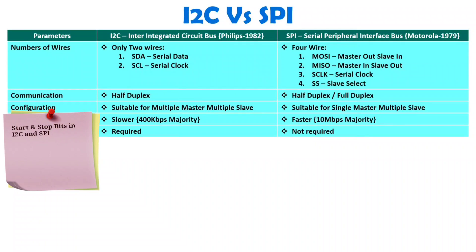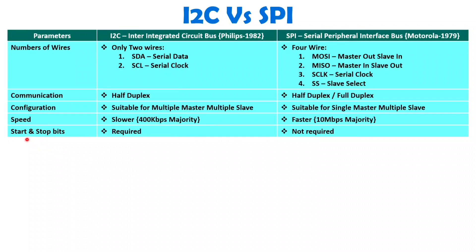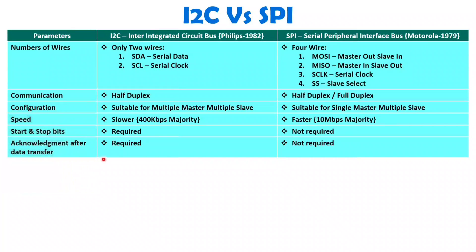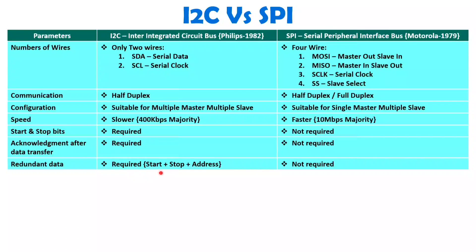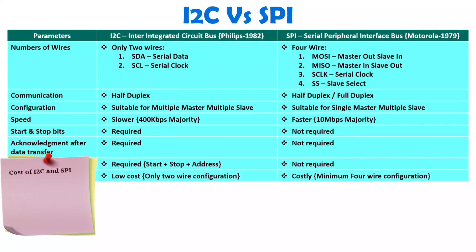When we talk about start and stop bits, I2C requires start and stop bits, while SPI does not need them. Acknowledgement is also given in I2C protocol during communication, but SPI does not require acknowledgement since dedicated lines are provided. Regarding redundancy, in I2C there is redundancy in terms of start bit, stop bit, acknowledgement bits, and address. While with SPI there is no redundancy. So I2C is slow in terms of speed and has redundancy of start, stop, acknowledgement, and address, while SPI has none of that and is fast.